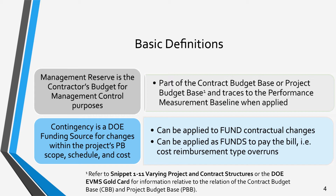Refer to Snippet 1-11, entitled Varying Project and Contract Structures, or the DOE EVMS Gold Card for information relative to the relation of the Contract Budget Base, CBB, and the Project Budget Base. Contingency is the DOE's funding source for unforeseeable costs within a project. It may be applied to fund contractual changes within the project's performance baseline scope, schedule, and cost.